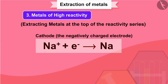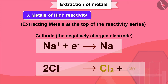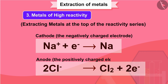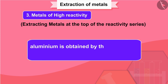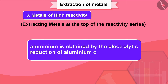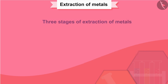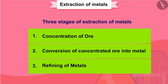The reactions for electrolysis are shown here. Similarly, aluminium is obtained by the electrolytic reduction of aluminium oxide. Let us now move to the last point of this extraction process, which is refining of metals.